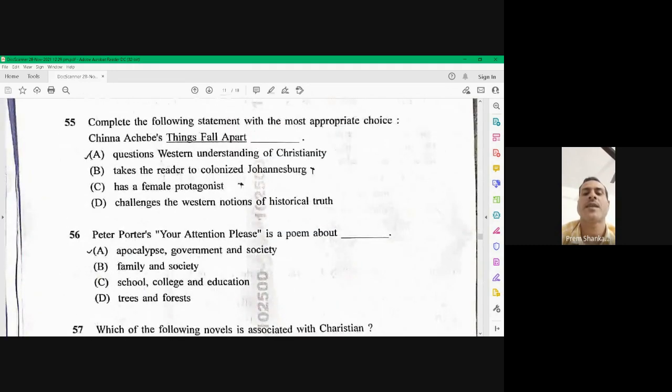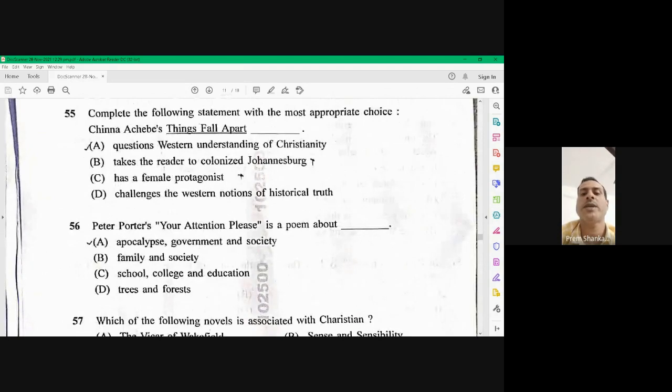Question number 55. Complete the following statement with the most appropriate choice. Chinua Archibald's things fall apart. It questions Western understanding of Christianity because Christian missionaries were settled in uh Ebo community in the things fall apart. So A is the right option here.